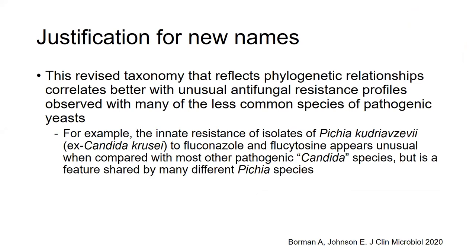Andy Borman and Liz Johnson, who wrote this review in JACM last year, justified using these new names in clinical practice by pointing out that the revised taxonomy reflecting correct phylogenetic relationships actually correlates better with unusual antifungal resistance profiles observed with many of the less common species of pathogenic yeasts. For example, Candida krusei is usually resistant to fluconazole and flucytosine — very unusual compared to other Candida species.